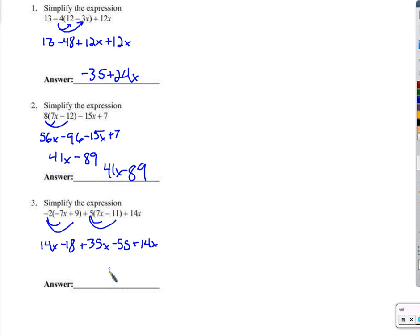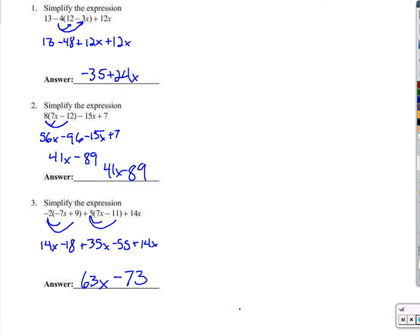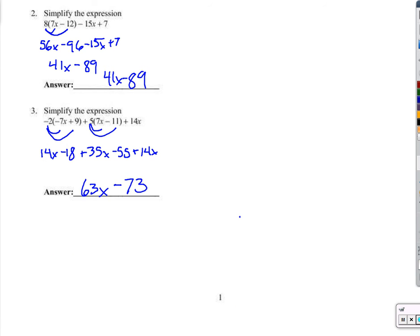And now we'll just collect all the x's together. 14x plus 14x is 28x, 63x. Negative 18 minus 55, negative 73. Let's just double check that. 35 plus 28, 63. And negative 18 minus 55, negative 73. All right.